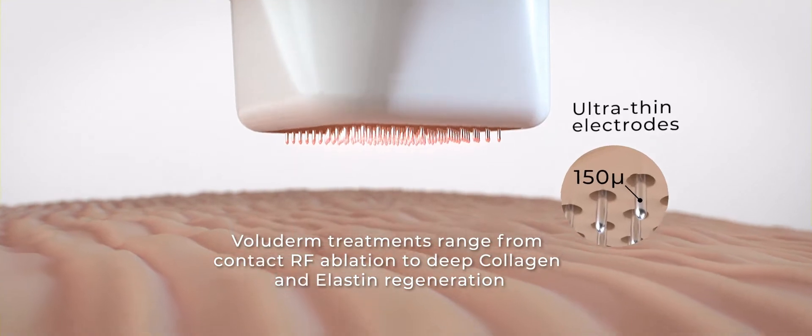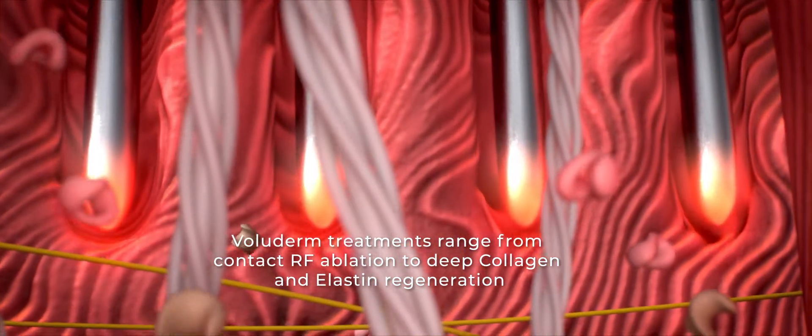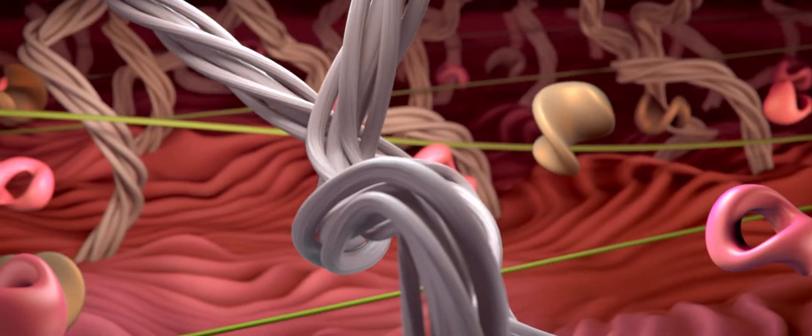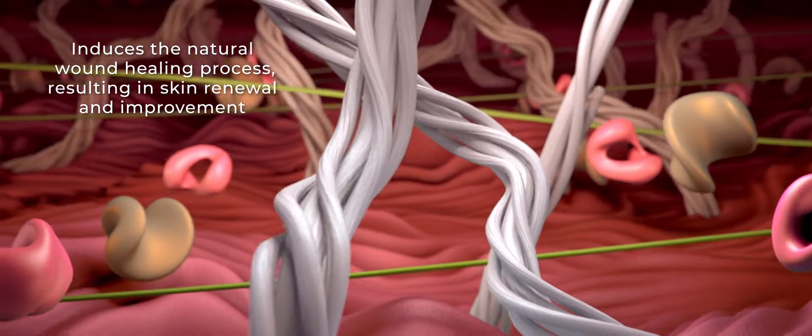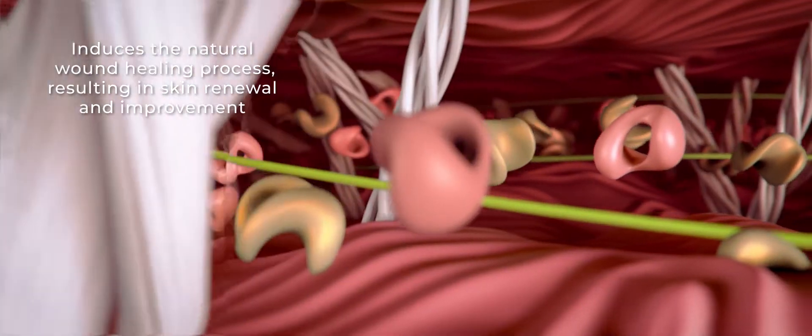Voluderm treatments range from contact RF ablation to deep collagen and elastin regeneration. By using RF energy to create controlled micro wounds, Voluderm induces the natural wound healing process resulting in skin renewal and improvement.